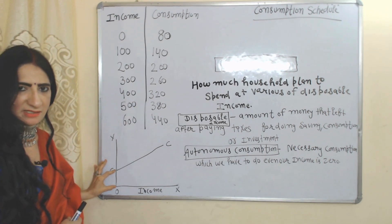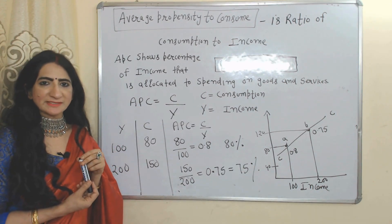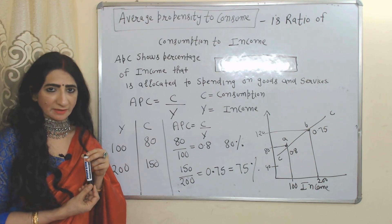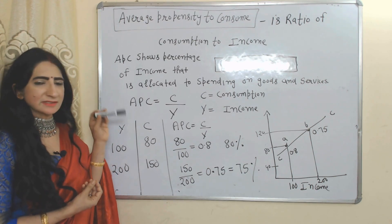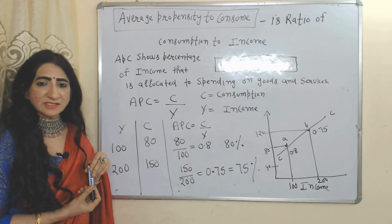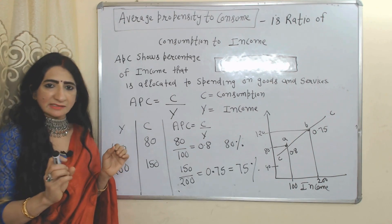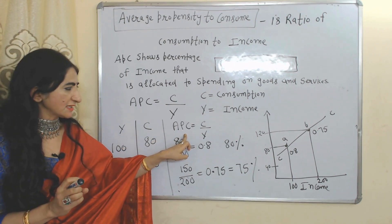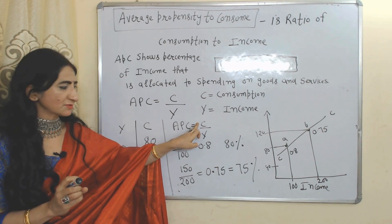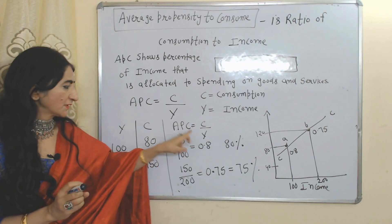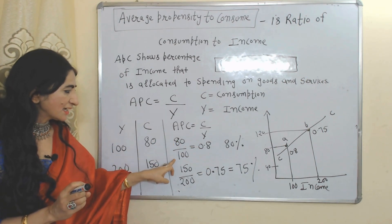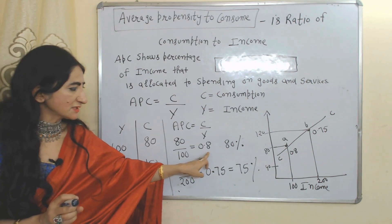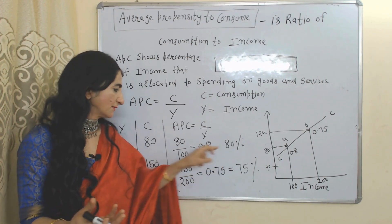Now we will see the average propensity to consume (APC). APC is the ratio of consumption to income. It shows the percentage of income that we spend on goods and services. The formula for calculating APC is C over Y, where C is consumption and Y is income. In the first case, C is 80 and Y is 100, so our APC is 0.8, meaning 80% of our income is being consumed.